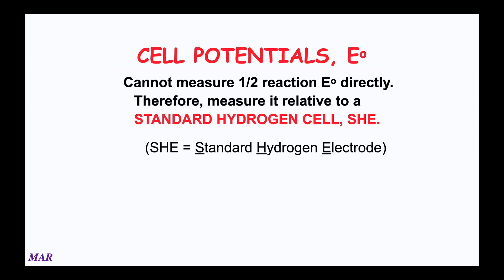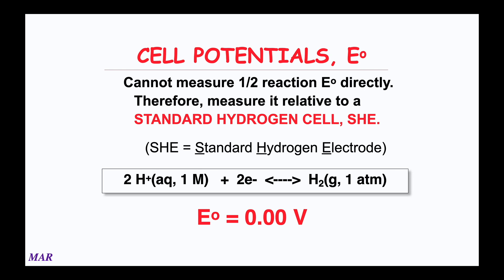The measuring stick that electrochemists use is called the standard hydrogen electrode, or SHE. Electrochemists have agreed that this half-reaction — 2H⁺ (aqueous, 1 mol/L) plus two electrons making hydrogen gas at 1 atmosphere — serves as the reference. Just as everyone agreed on the meter as a unit of length, electrochemists agreed on the SHE. Its cell potential is defined as 0.00 volts.